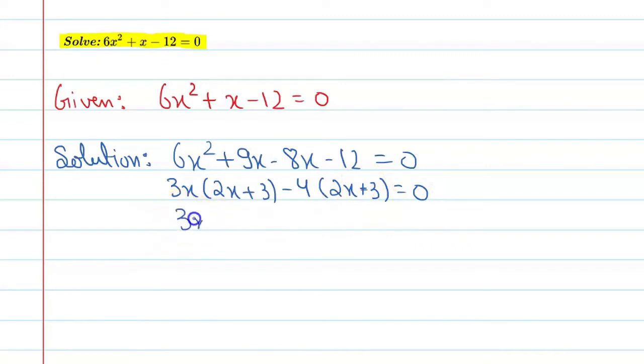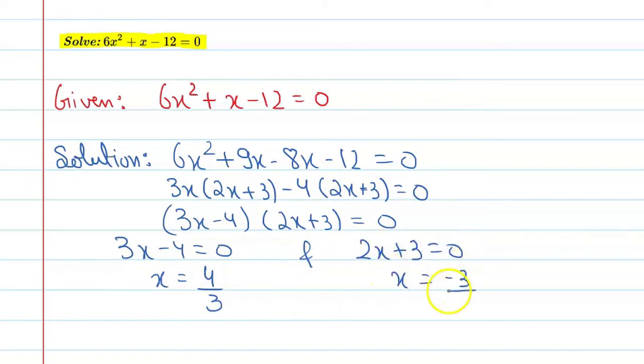So, now 3x minus 4 and 2x plus 3 are those linear factors. Now, 3x minus 4 equal to 0, so x is equal to 4 upon 3, and 2x plus 3 equal to 0, so x is equal to minus 3 upon 2.